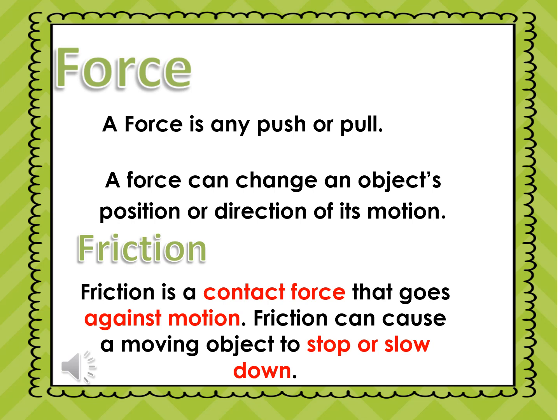Friction is a contact force that goes against motion. Friction can cause a moving object to stop or slow down. Friction is a contact force because when two objects touch each other or rub against each other, friction happens. When one object touches another object to give a force on it, then it's a contact force. Friction will stop or slow down the object.